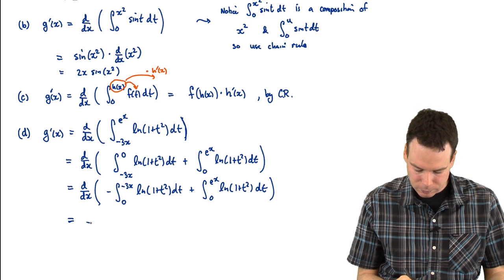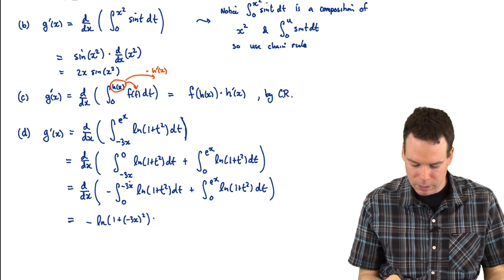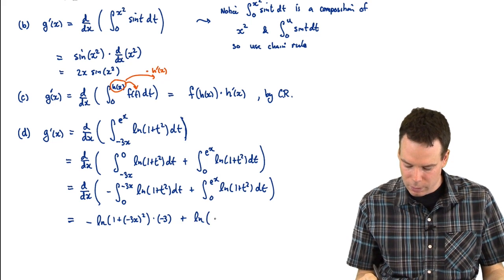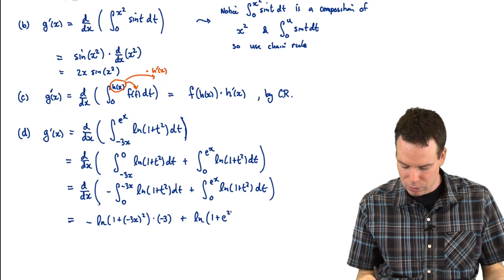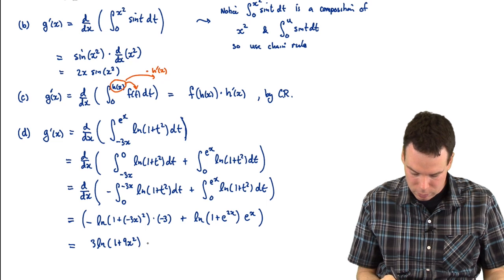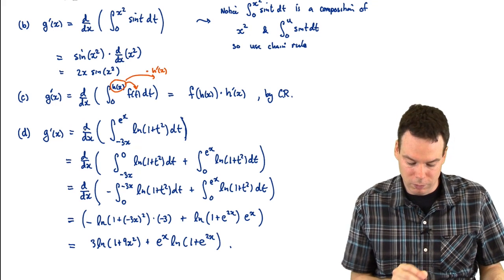Now we differentiate each piece, since the derivative of a sum is the sum of the derivatives. The first piece becomes −ln(1 + (−3x)²) times the derivative of −3x, which is −3. The second piece is ln(1 + e^(2x)) times the derivative of e^x. Simplifying, we get 3·ln(1 + 9x²) + e^x · ln(1 + e^(2x)), and there we have the derivative.